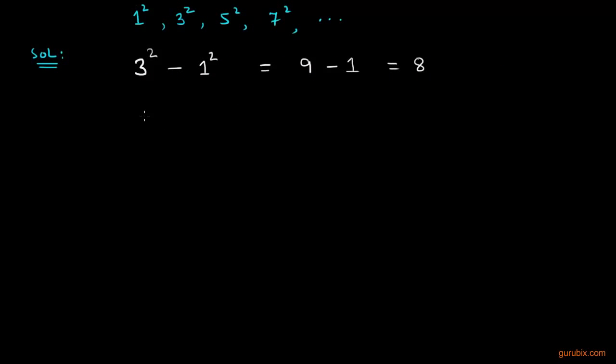Now we shall subtract second term from the third term. The third term is 5 square and second term is 3 square. So 5 square equals 25 and 3 square equals 9, so we get 16.